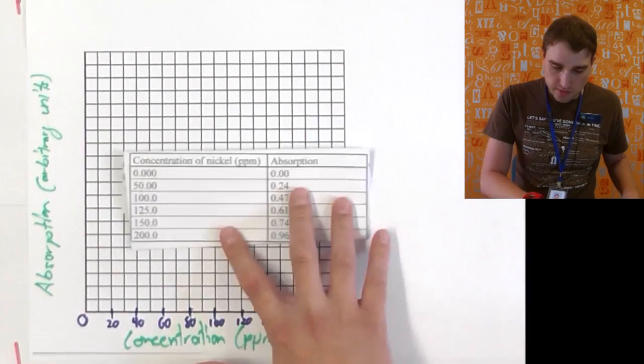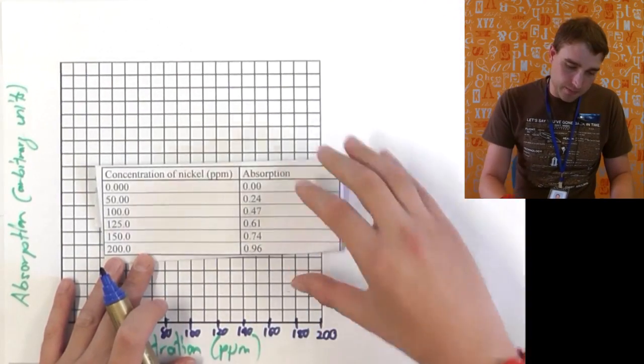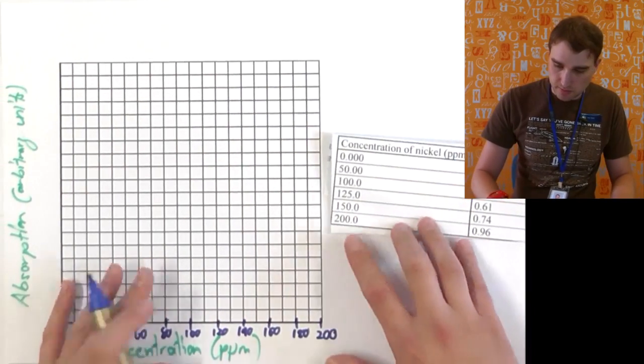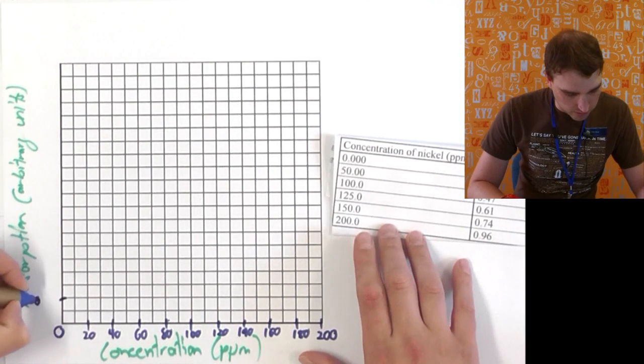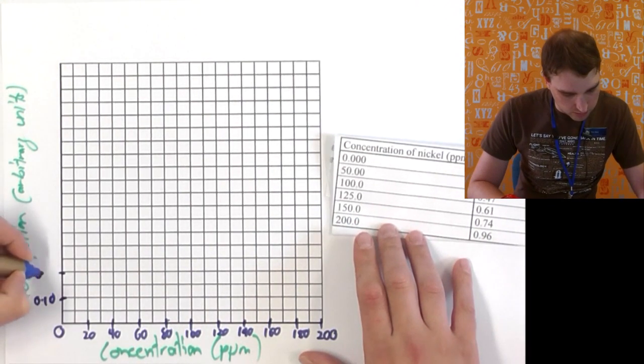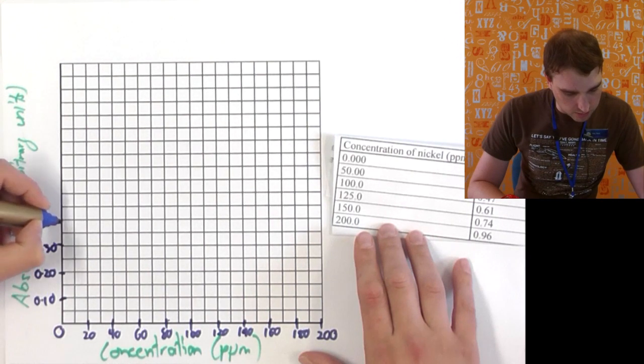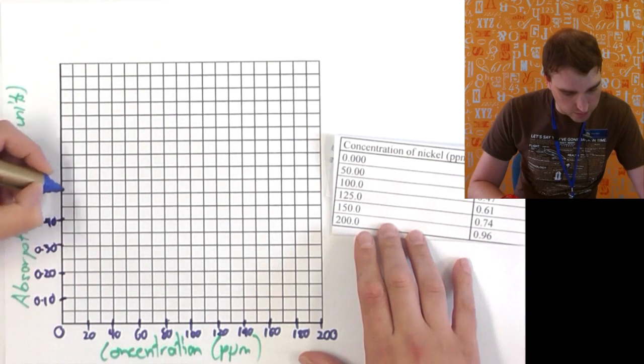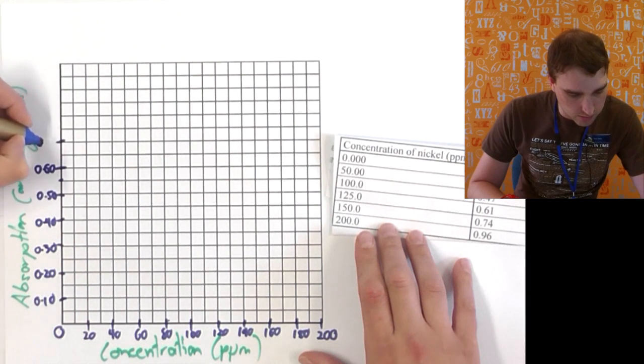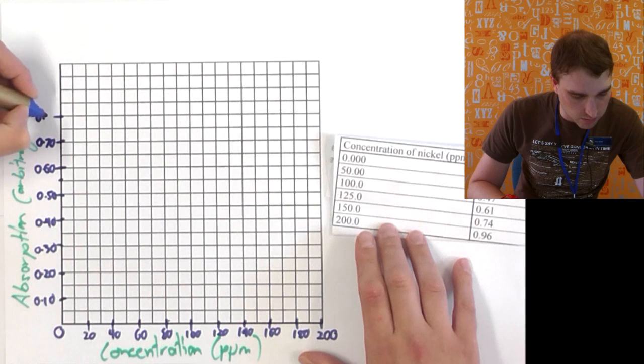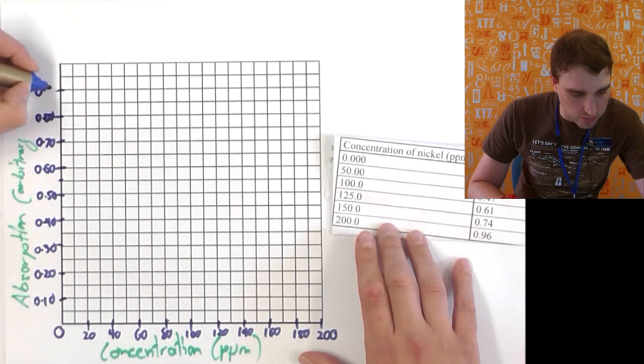Next I'm going to look at the absorbance. My absorbance goes from 0 up to 1 basically, so pretty close to 1. So that means that each two boxes here is going to be 0.1. So 0.10, 0.20, 0.30, 0.40, 0.50, 0.60, 0.70, 0.80, 0.90, and 1.00.